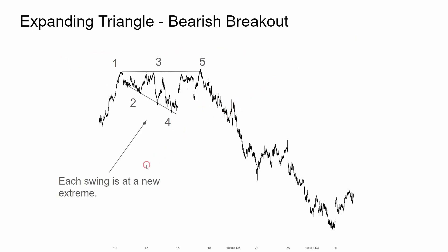Expanding triangle — bearish breakout. Each swing is at a new extreme. You might say this is a triple top, and it kind of is, but here's swing one, then swing three is about the same level, but swing five is higher. It's expanding at the bottom, so I counted it as an expanding triangle — swings 1, 2, 3, 4 as this cluster, and then 5. Bulls get the failed breakout and then it swings lower for several days — a great multiple-day swing trade. Note that this other triangle is not expanding because the prices are not at new extremes; it's staying contained within the prior leg — that makes it a bear flag.